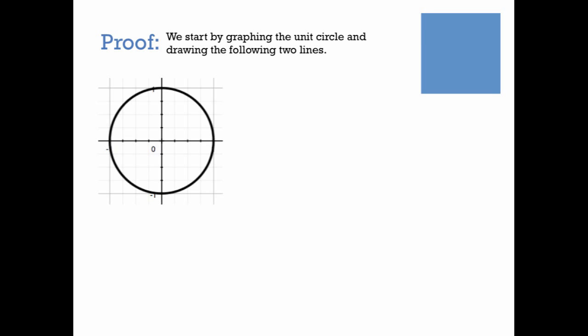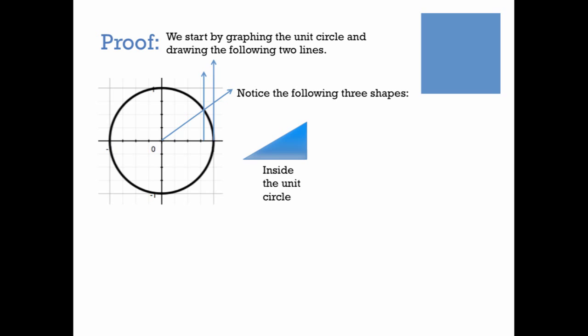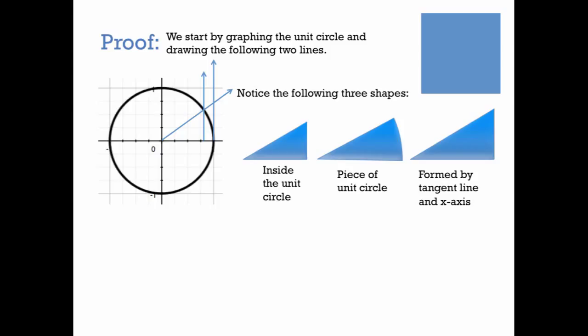We start by graphing the unit circle and drawing a couple of lines: a ray from the origin, a vertical line coming up from the x-axis to the point of intersection on the circle, and a line tangent to the circle on the right-hand side. Looking at what we have, there are three shapes: inside the circle, there's a small right triangle; from the ray to the circle and x-axis, we get a sector (a wedge-shaped piece of the circle); and from the ray to the tangent line and x-axis, we get a bigger right triangle. No matter where you draw that ray in the first quadrant, you'll always have exactly these three nested shapes.